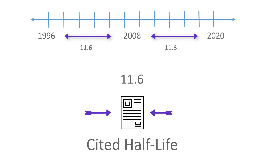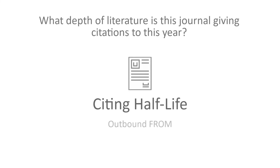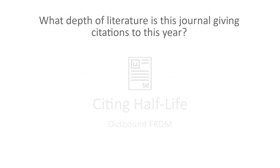In the 2020 JCR year, this means the median publication year of cited items is 2008. The citing half-life is the same principle but for outbound citations from the journal to others — what depth of literature is this journal giving citations away to?